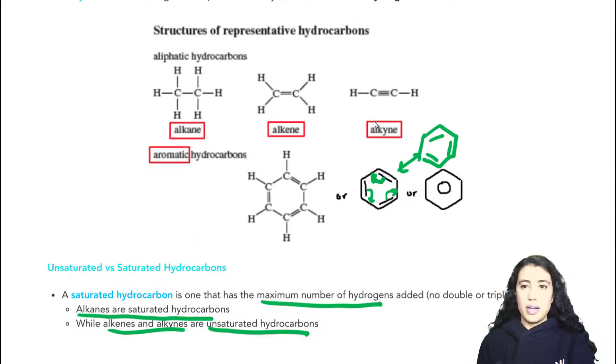So we can actually, to illustrate this and make sure we fully understand this, we can count the number of carbons and hydrogens in each of these alkanes, alkenes, and alkynes. So in the alkane, we have 2 carbons, and we have 1, 2, 3, 4, 5, 6 hydrogens. So then the formula makes sense, where you take your N number of carbons, multiply by 2, and add 2 to get 6 hydrogens.